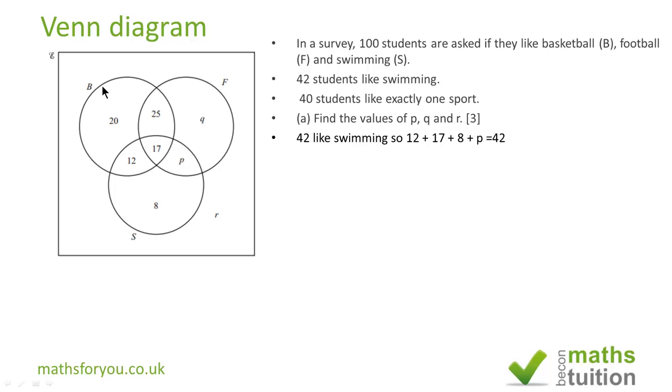Now if we start with swimming, we know 42 like swimming. So if we add 12 and 17 and 8 and then P, we have 42. If we now isolate P, then P becomes 42 minus 37, so P is 5.